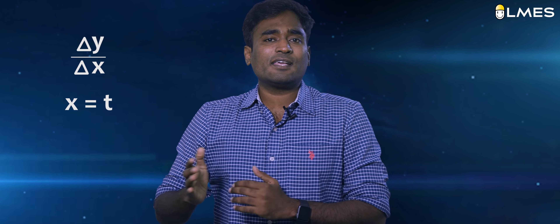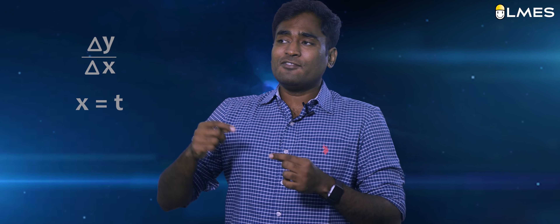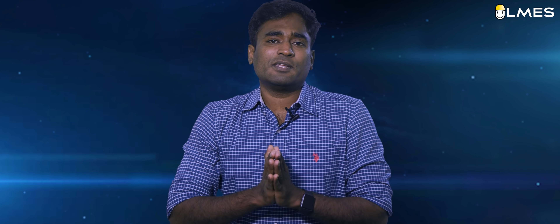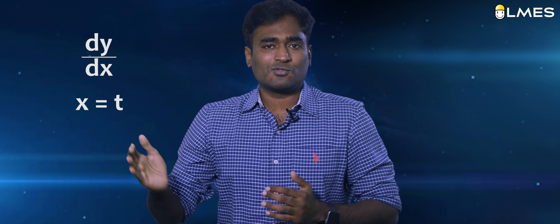So if we choose the two points, the difference is just here. If we choose the slope, the slope is del y by del x — this is the average velocity. Now if we choose the difference between two points as infinitely small, the slope becomes dy by dx. This is the differentiation — the instantaneous rate of change.